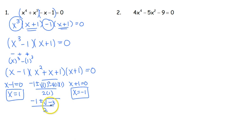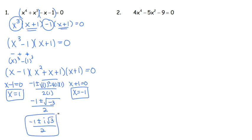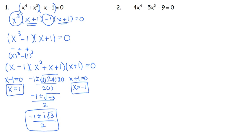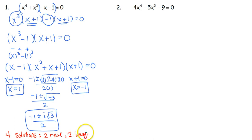We have a negative on the inside, so we've got to pull that out as an i — 3 can't be broken down. So we know we had a fourth degree polynomial, so we're going to have four solutions. How we break those solutions down: we have two real — that's the positive one and the negative one — and then we have two imaginary. Those two imaginary come from the quadratic formula, so we have plus i root 3 and minus i root 3. Alright, so we found our solutions for number 1 — let's go ahead and find our solutions for number 2.